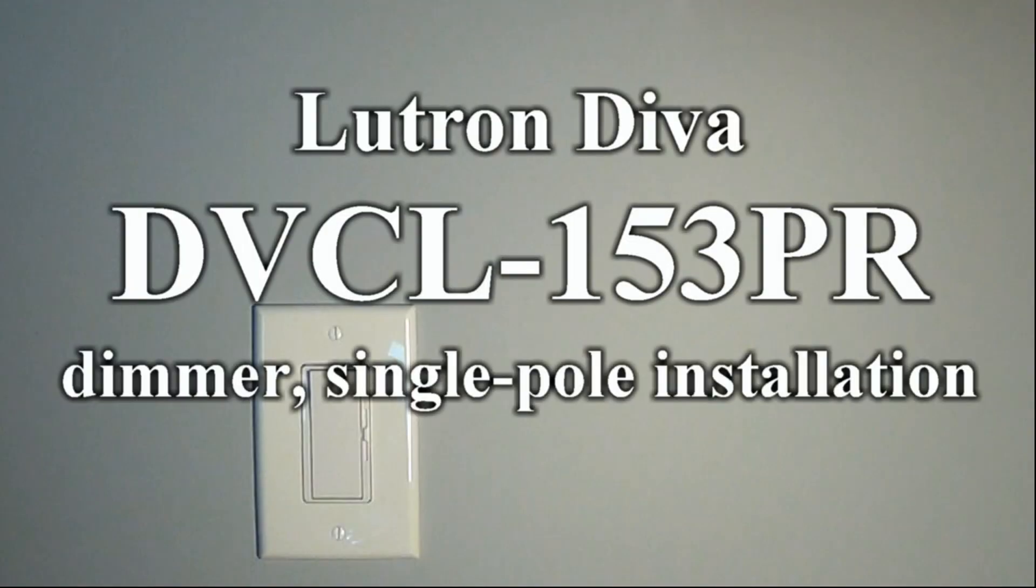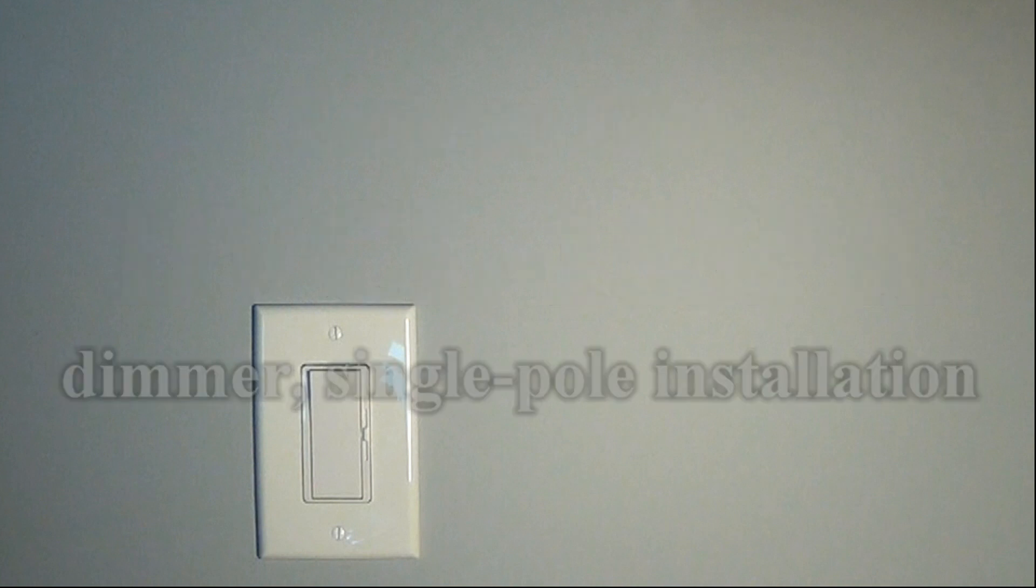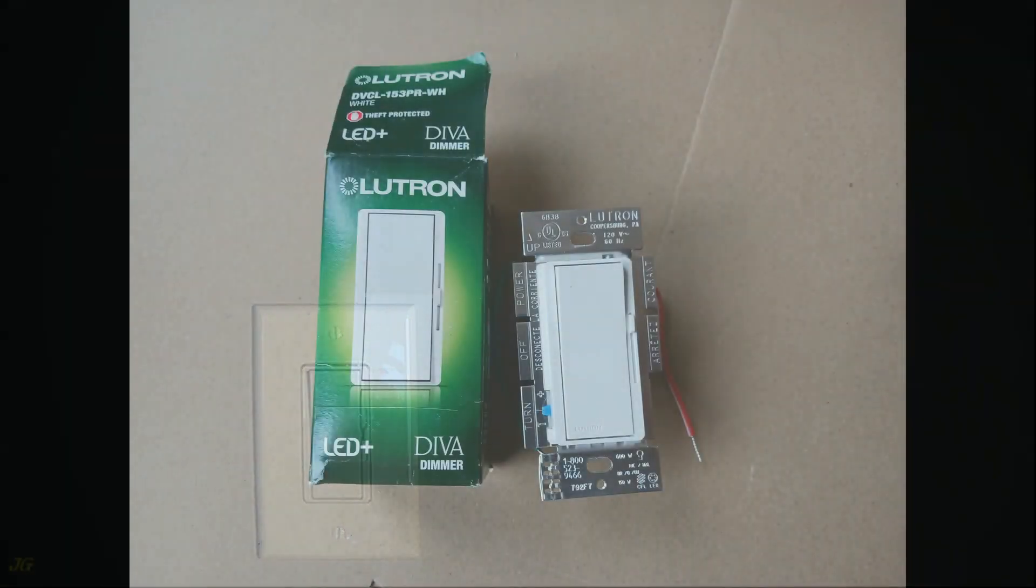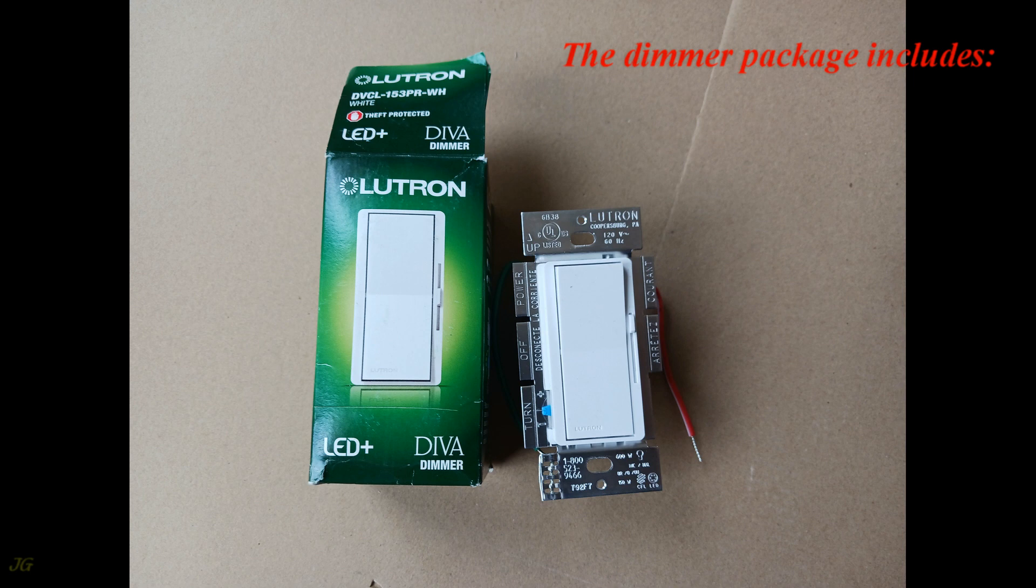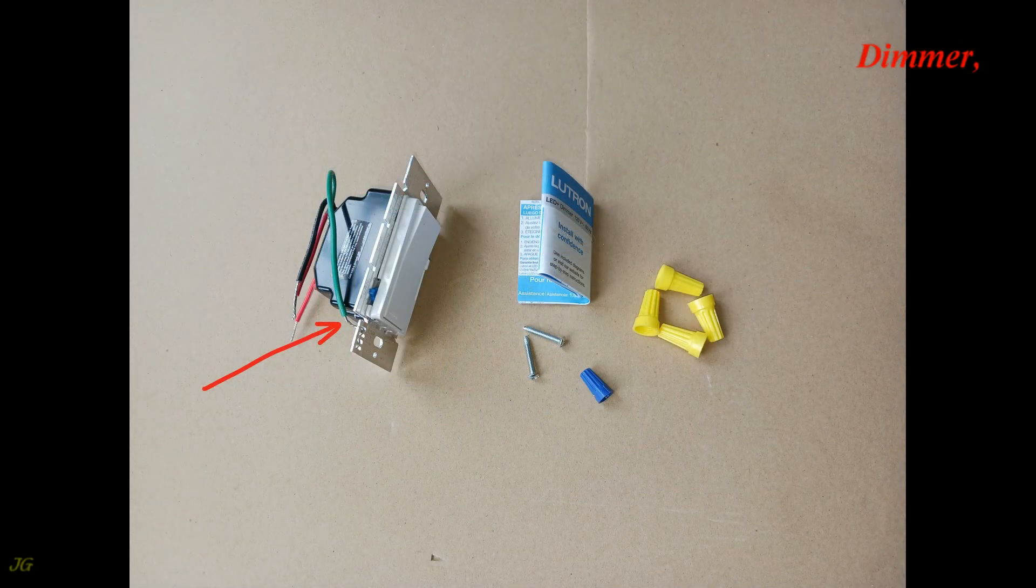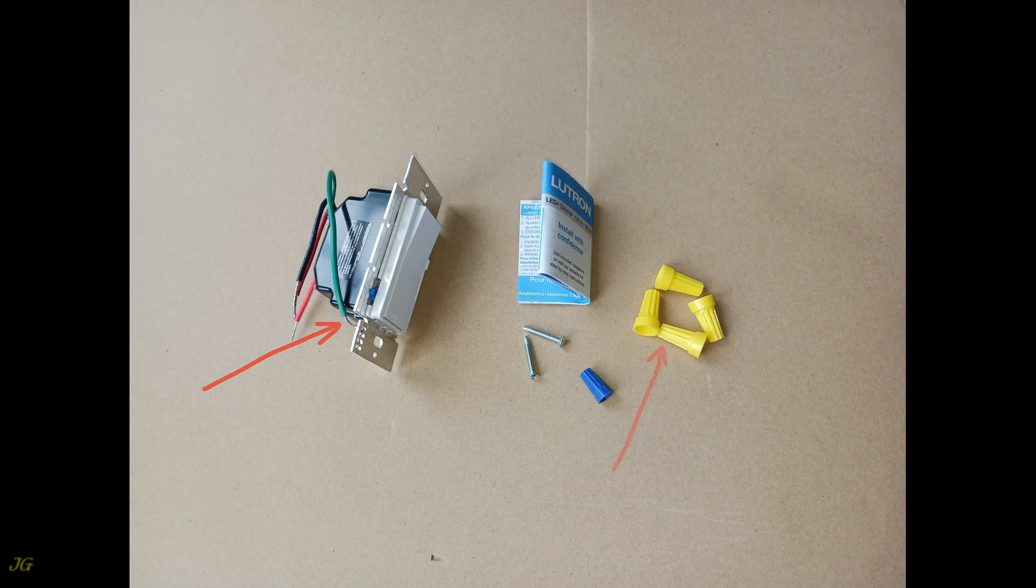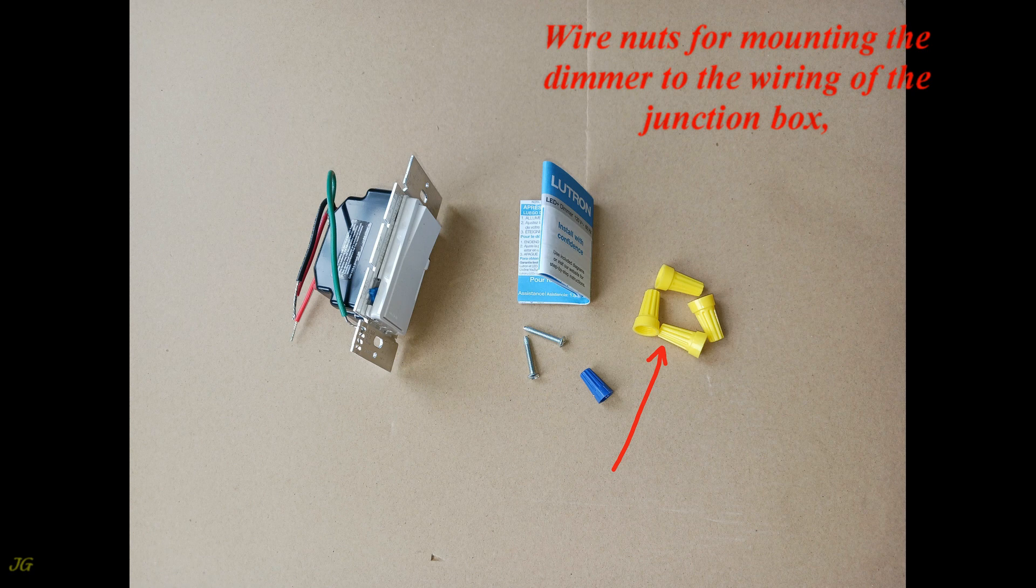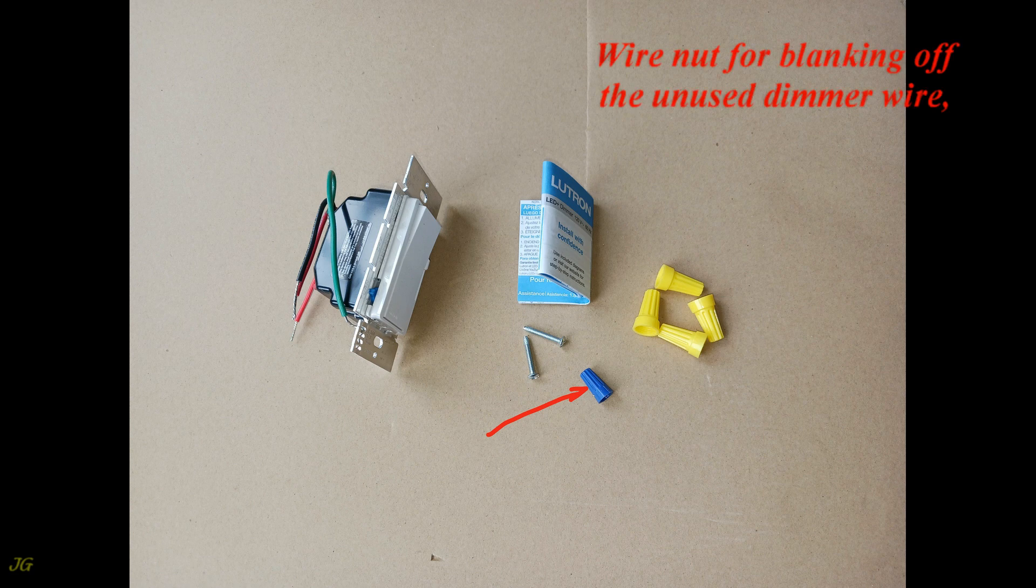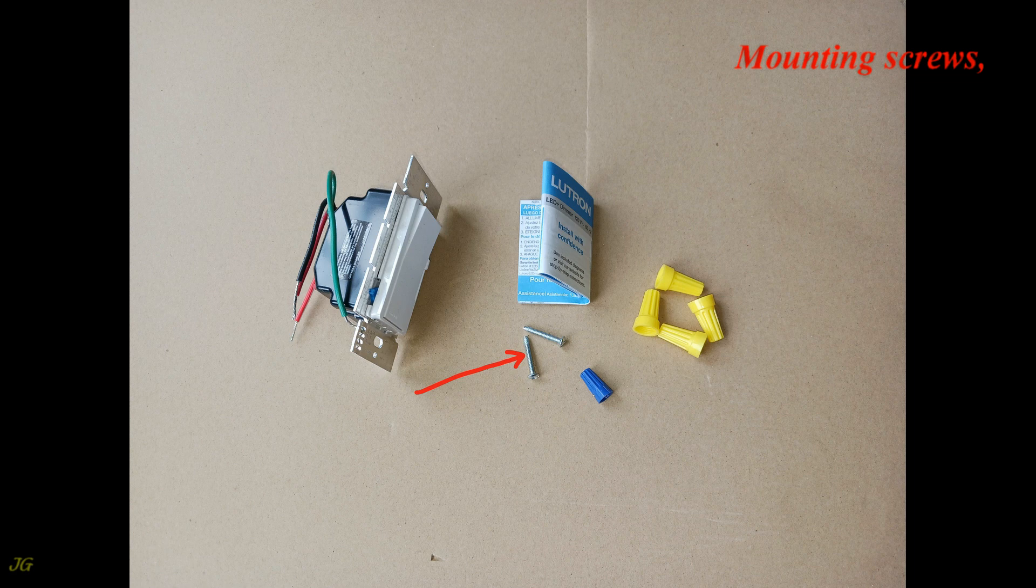Lutron Diva DVCL-153PR Dimmer, Single Pole Installation. The dimmer package includes: dimmer, wire nuts for mounting the dimmer to the wiring of the junction box, wire nut for blanking off the unused dimmer wire, mounting screws, and instruction.